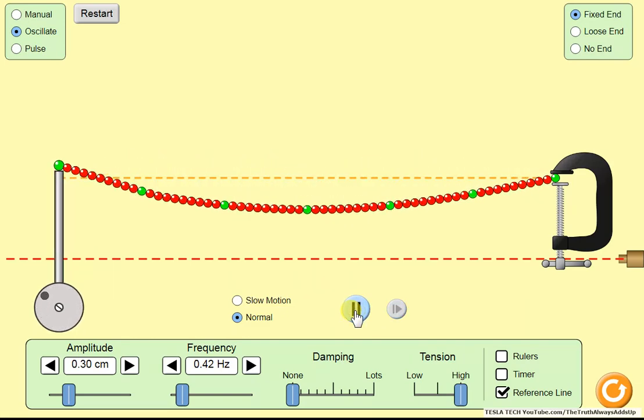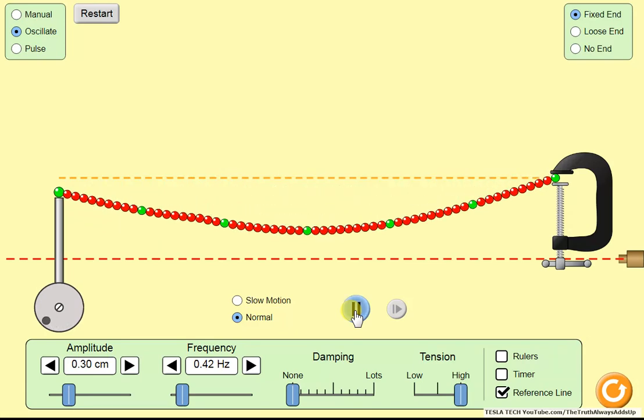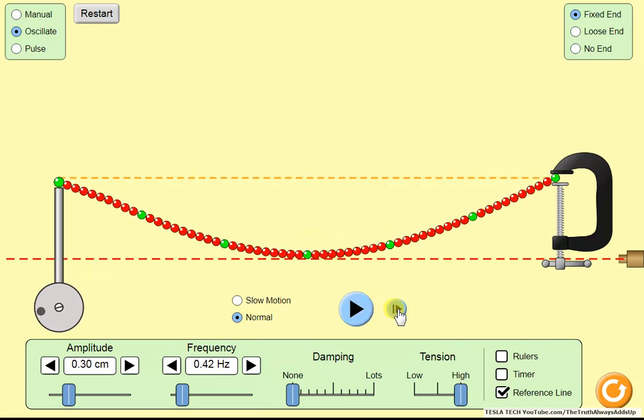Alright, there's one, and there's two. Okay, it took two cycles to get the wave to 1.2 centimeters, driving it with 0.3 centimeters, so it doubled each cycle.